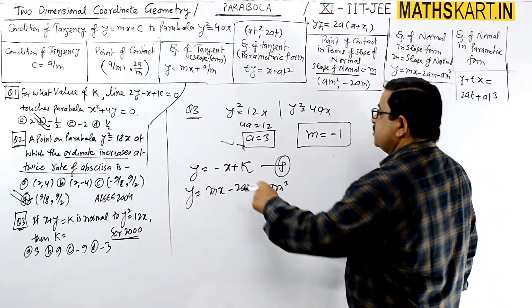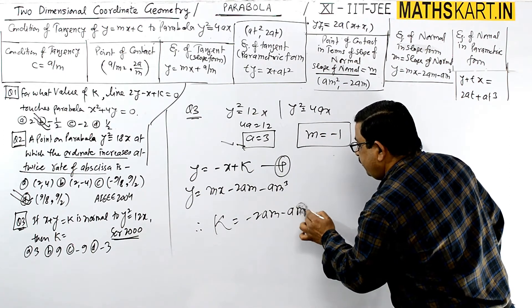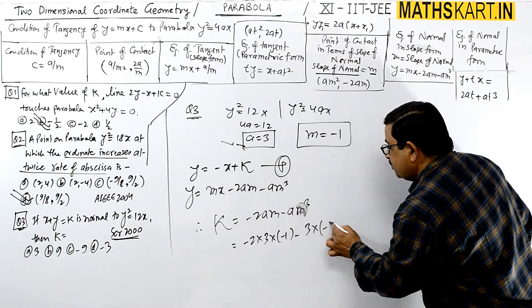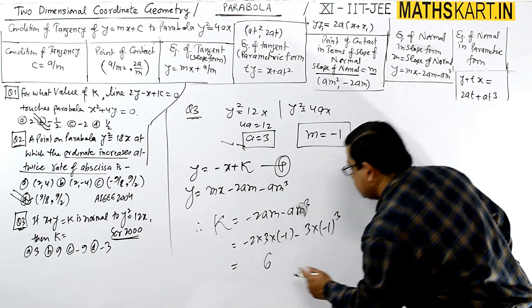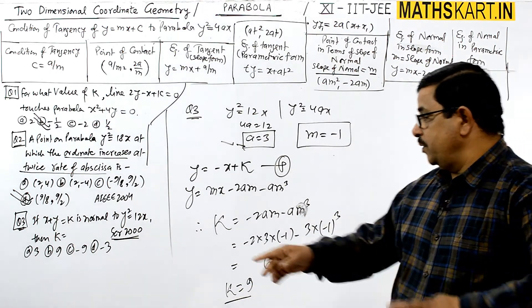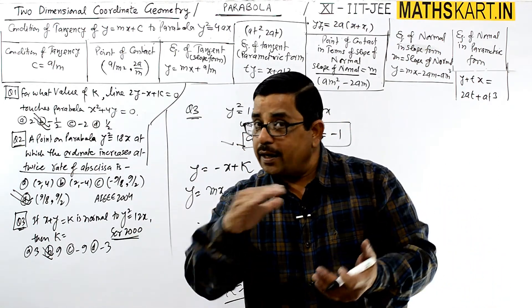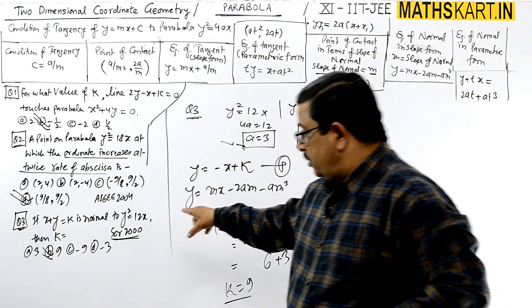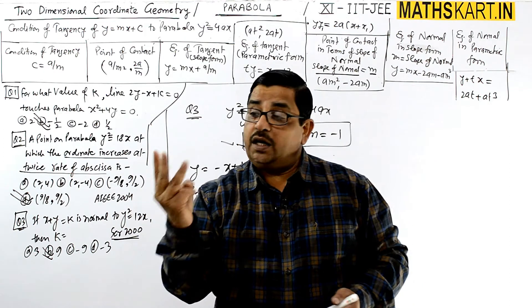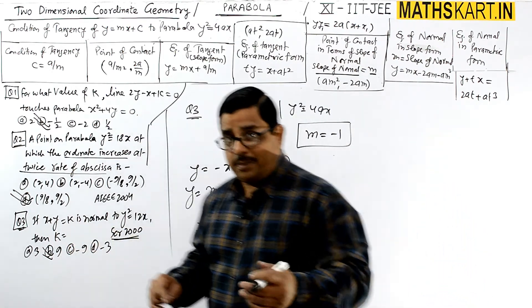With m = -1 and a = 3, directly comparing: k equals to -2am - am³ = -2(3)(-1) - (3)(-1)³ = 6 + 3 = 9. So k equals to 9. Option B is correct. This is very fast if you already know the condition. For the standard parabola y² = 4ax, these conditions apply directly; for other parabolas, you would need to rework from the beginning.